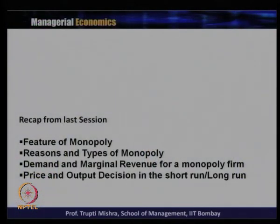If you remember, we talked about the features of monopoly first — the different characteristics — then we discussed regions and types of monopoly, then demand and marginal revenue for a monopoly firm, and then price and output decisions in the short run and in the long run. In the short run the firm may get normal profit, supernormal profit, or incur loss, but in the long run the firm generally never incurs a loss — they try to get at least normal profit if not supernormal profit.